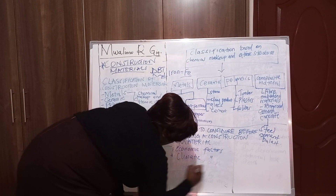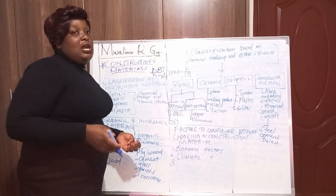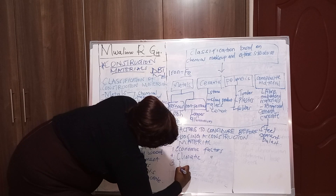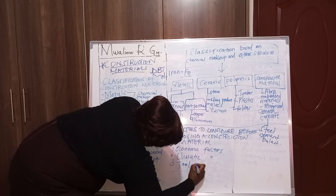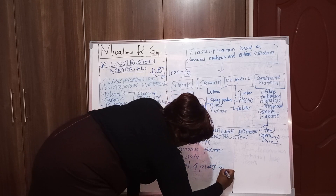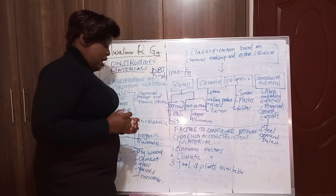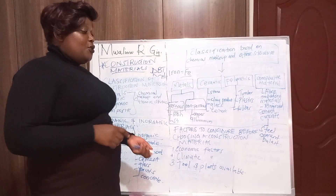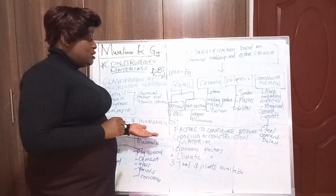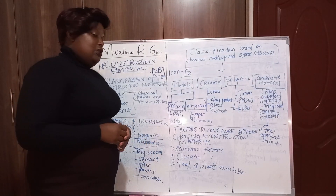Number two, we can say climatic factors. Is the climate suitable for a material to work well? We also have tools and plants available — do you have the necessary tools or the required tools for choosing that type of construction material?